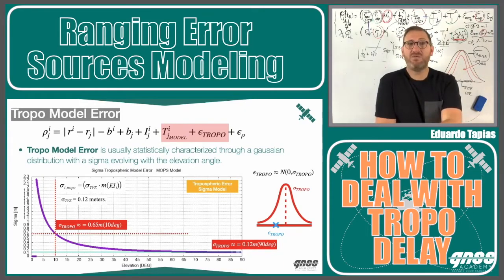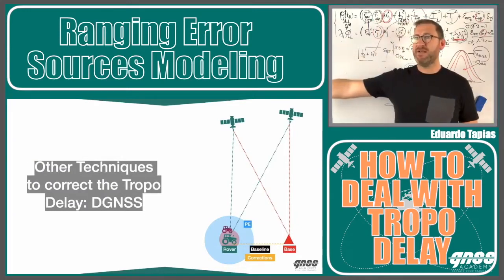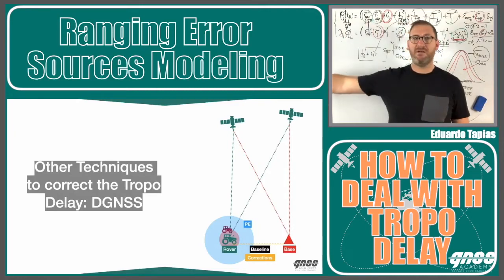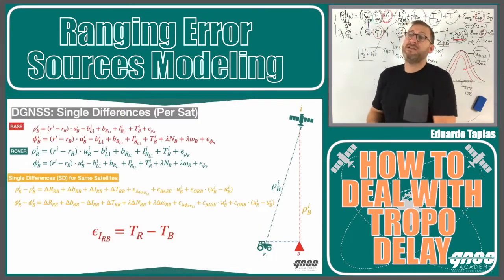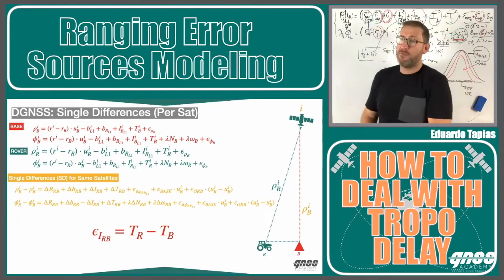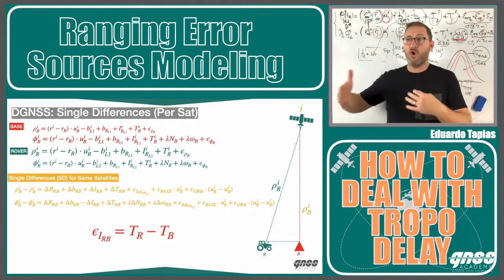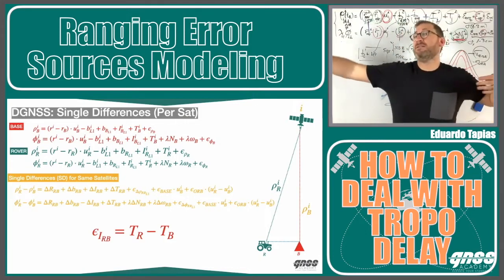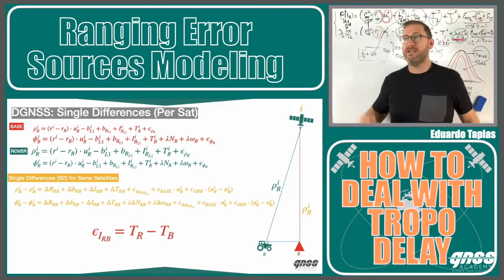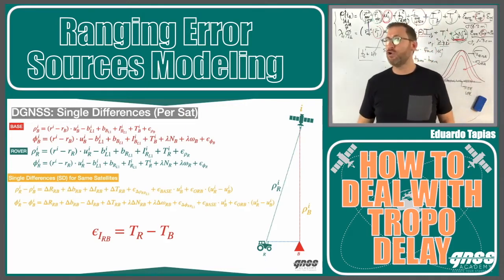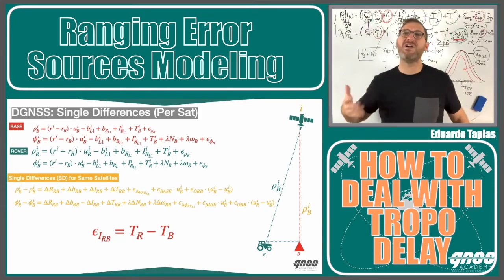Another way to remove troposphere is using differential GNSS techniques. With a baseline — a base station a few kilometers away — we make single differences, and the error becomes the difference between the tropo at the base and the tropo at the rover. This difference will be smaller for shorter baselines. At 10 kilometers, the troposphere is almost entirely cancelled. But at farther distances, the troposphere starts to be uncorrelated between base and rover.